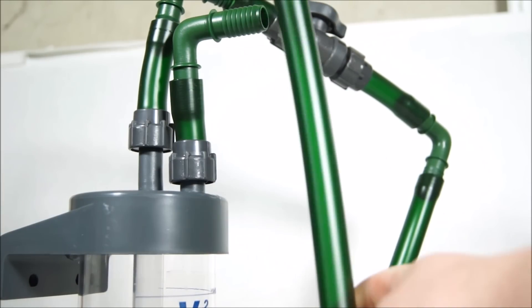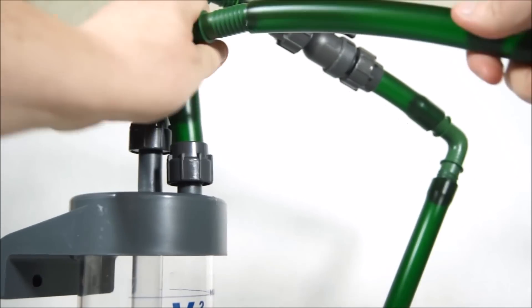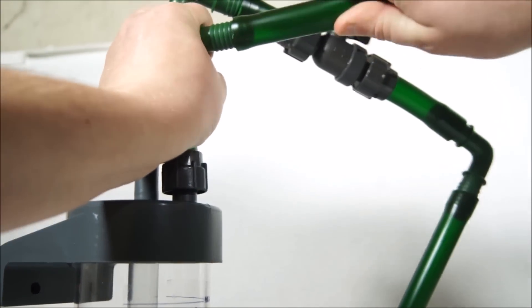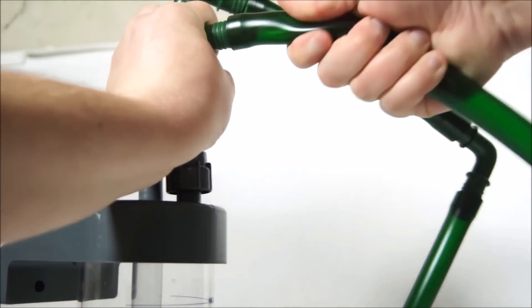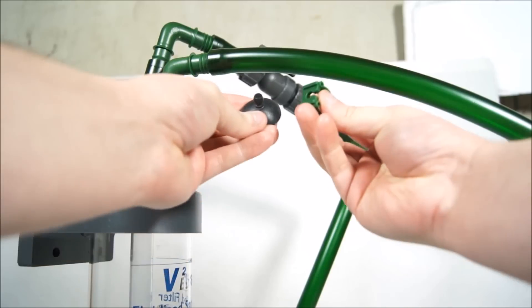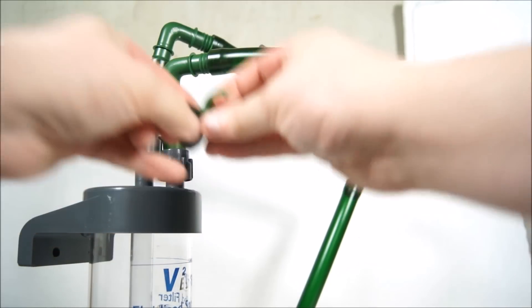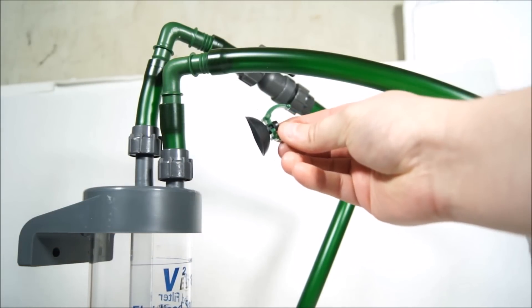This next step you can customize as you please. I decided to use a long piece of tubing and a suction cup so I can attach the tubing to the aquarium wall. You can also use the supplied plastic parts to make your return.